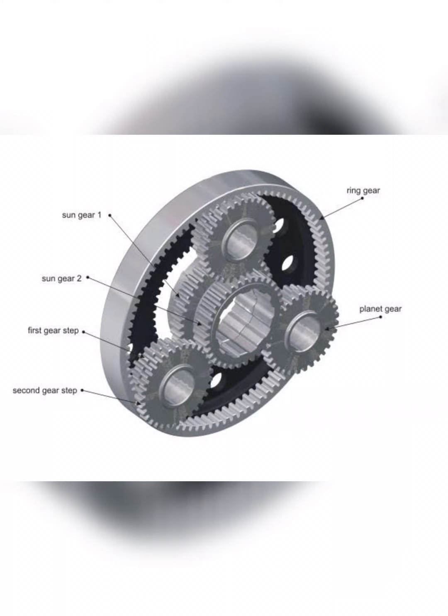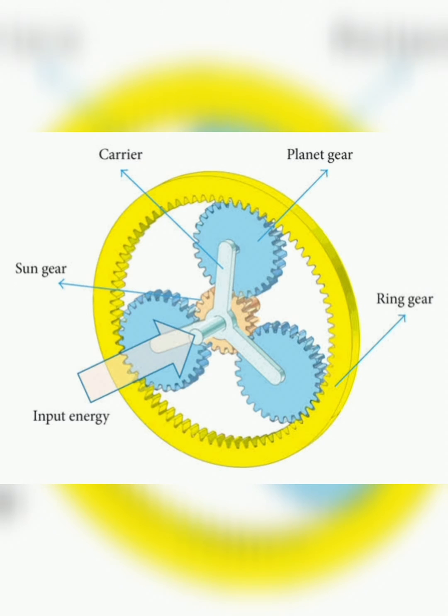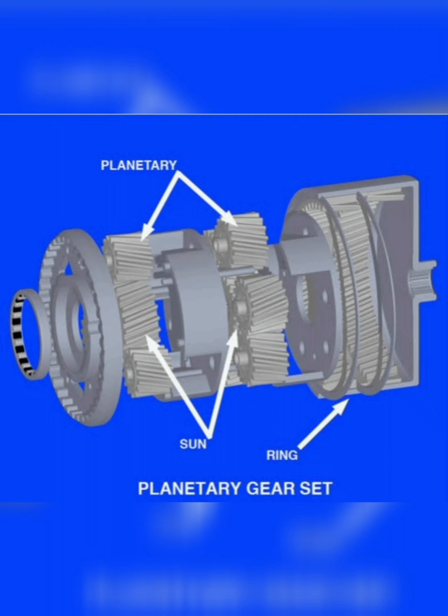The central sun gear is usually the input gear. Around it, two or more planet gears rotate within an outside ring gear and are connected to the output shaft via a carrier.